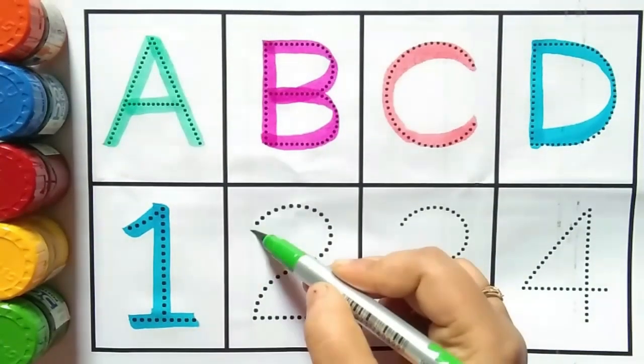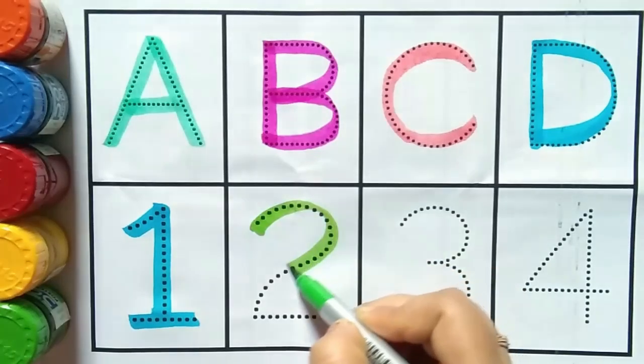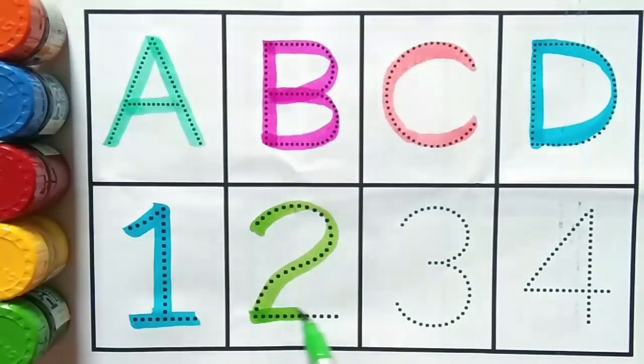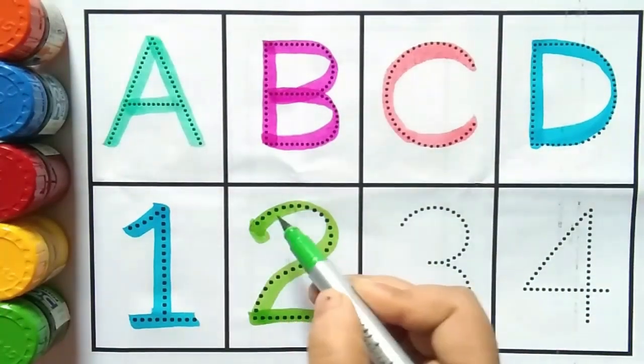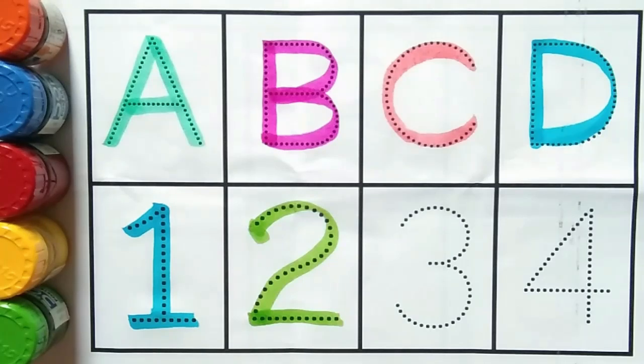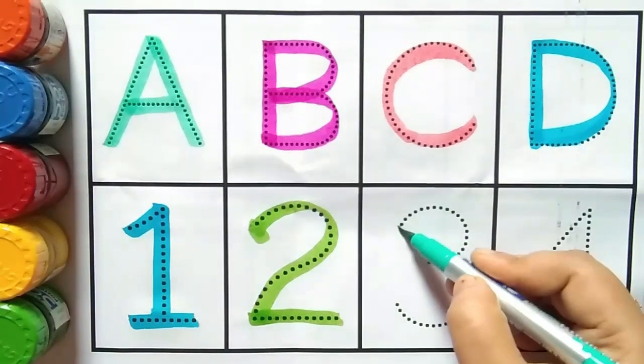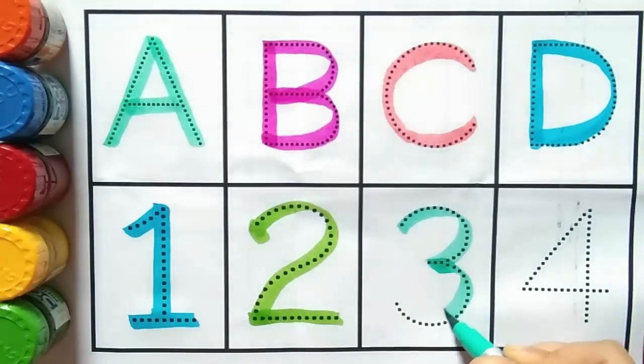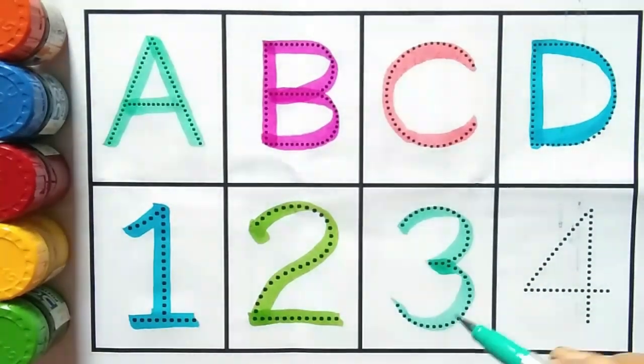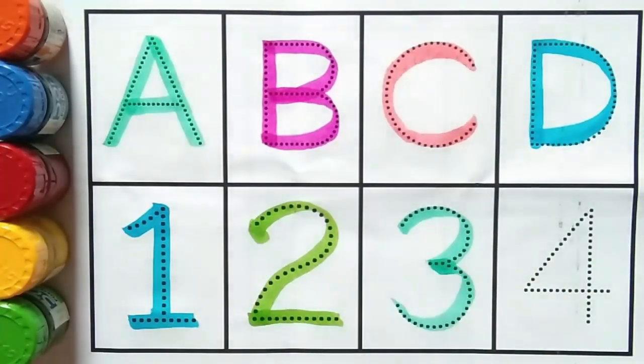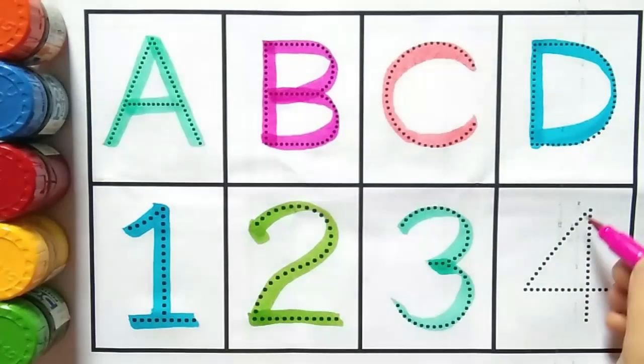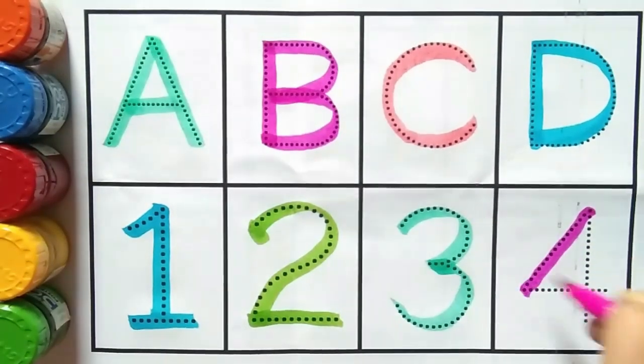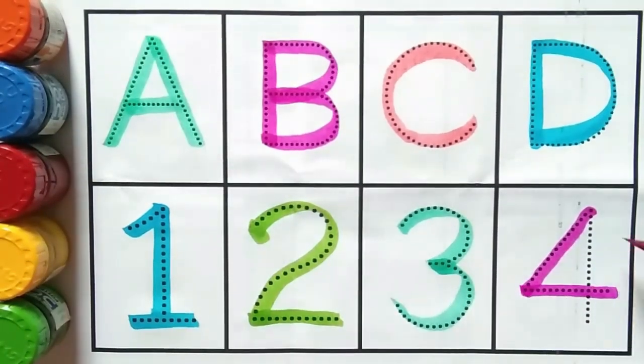After one comes two. This is number two. What is this kids? This is number two. Two, two, three, three, three, three, four, four, four, four, four.